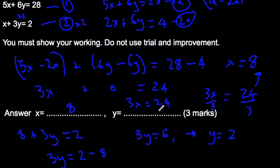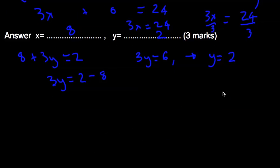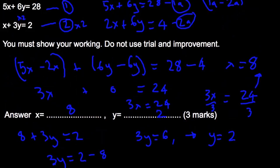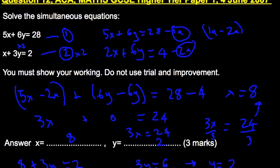Dividing both sides by 3, we get y equals 2. So the answer is x equals 8, y equals 2. That's one method of doing it. You could have done it the other way and eliminated the x instead of the y. I'll show you what would happen.